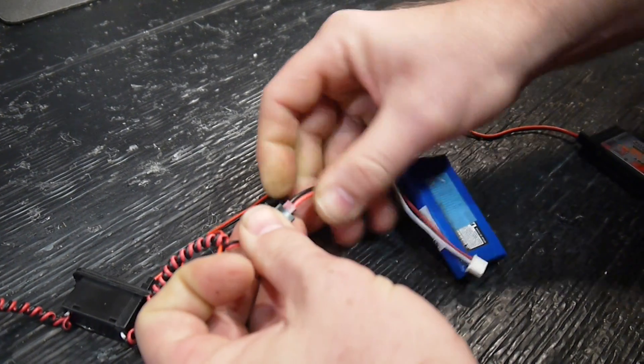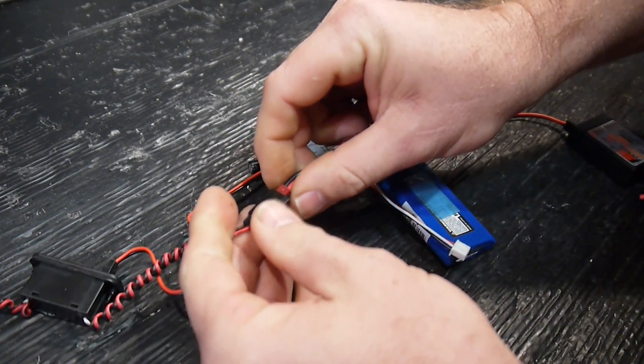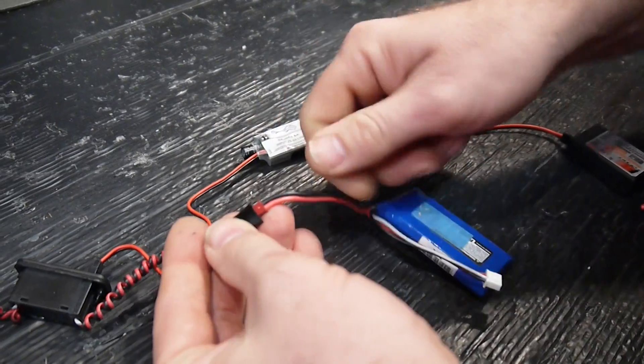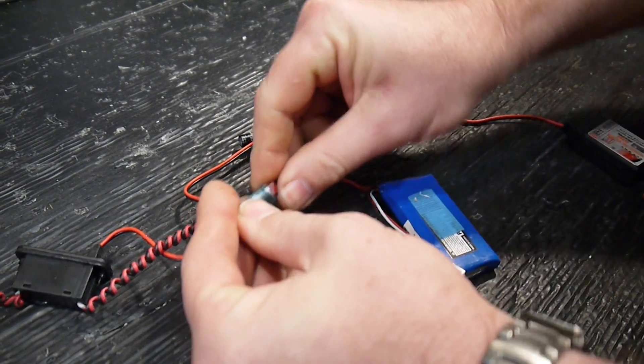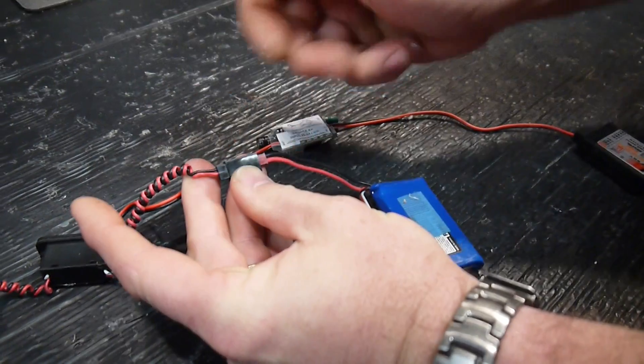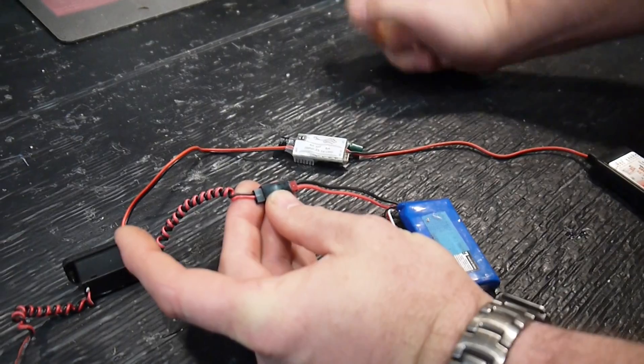Just be careful that you plug it in nice and straight, that those prongs do go into the plug. You don't want to bend the prongs. Look if you do bend them, it's very easy to straighten them back up anyway. But this clearly shows you negative to negative and positive to positive. You don't have to be too smart to work that out.